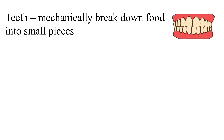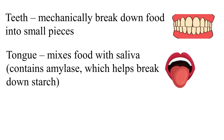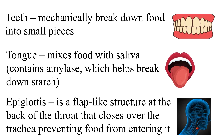Teeth mechanically break down food into small pieces. The tongue mixes food with saliva, which contains amylase that helps break down starch. The Epiglottis is a flap-like structure at the back of the throat that closes over the trachea, preventing food from entering it.